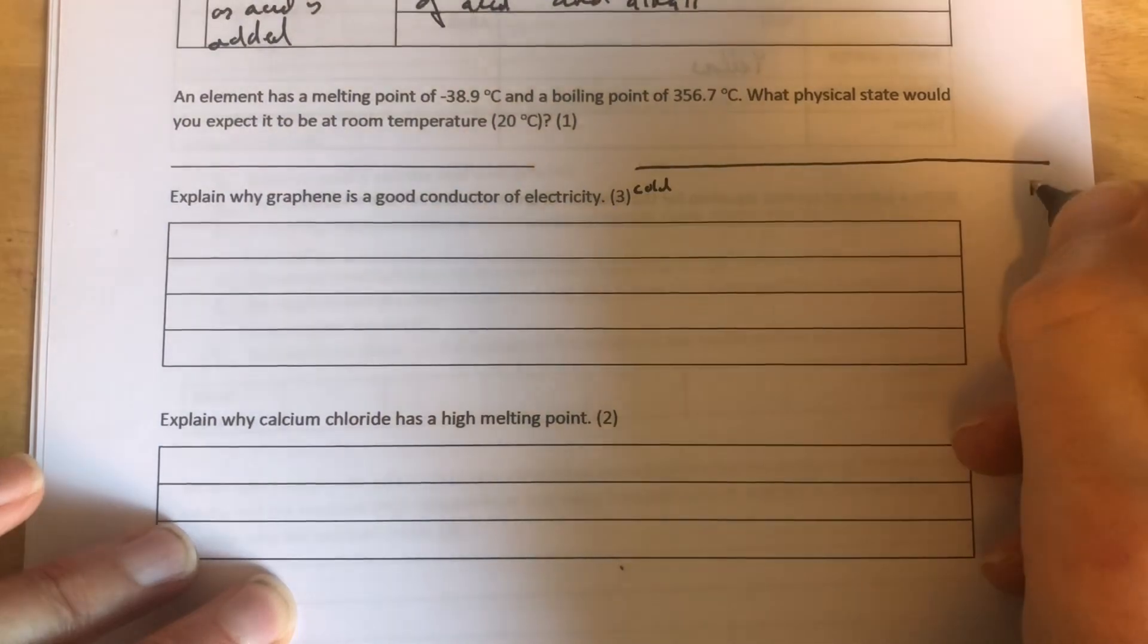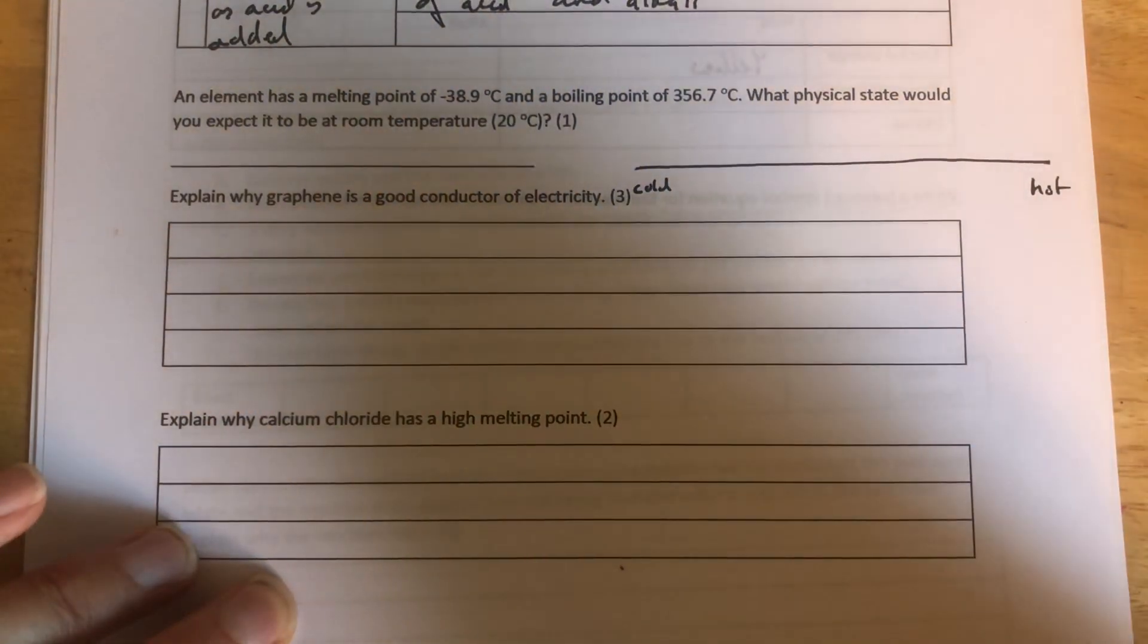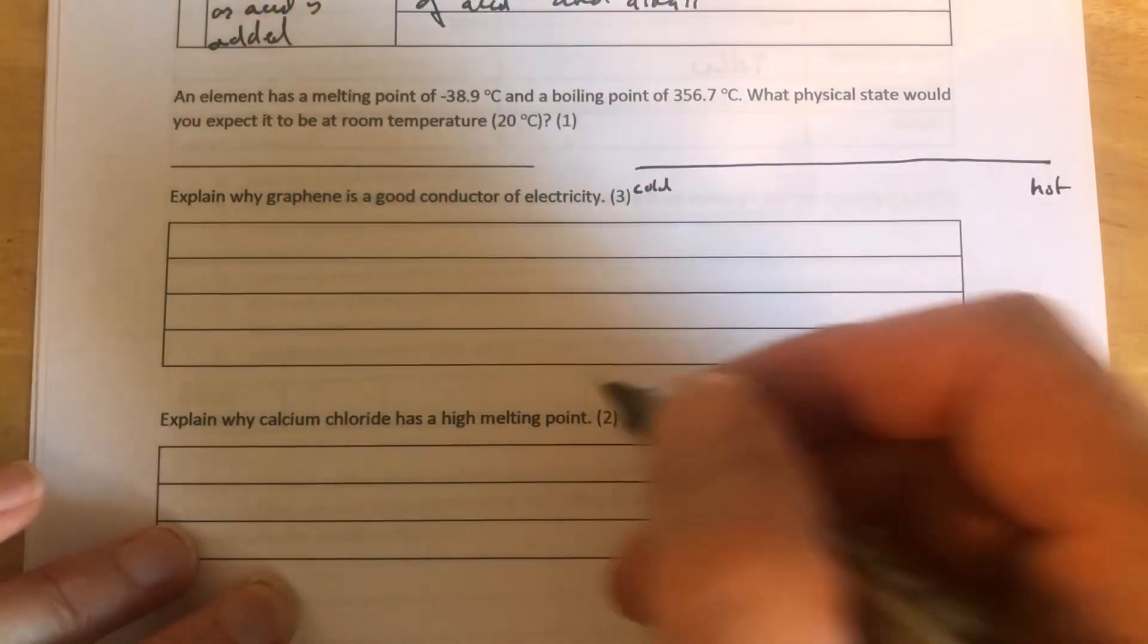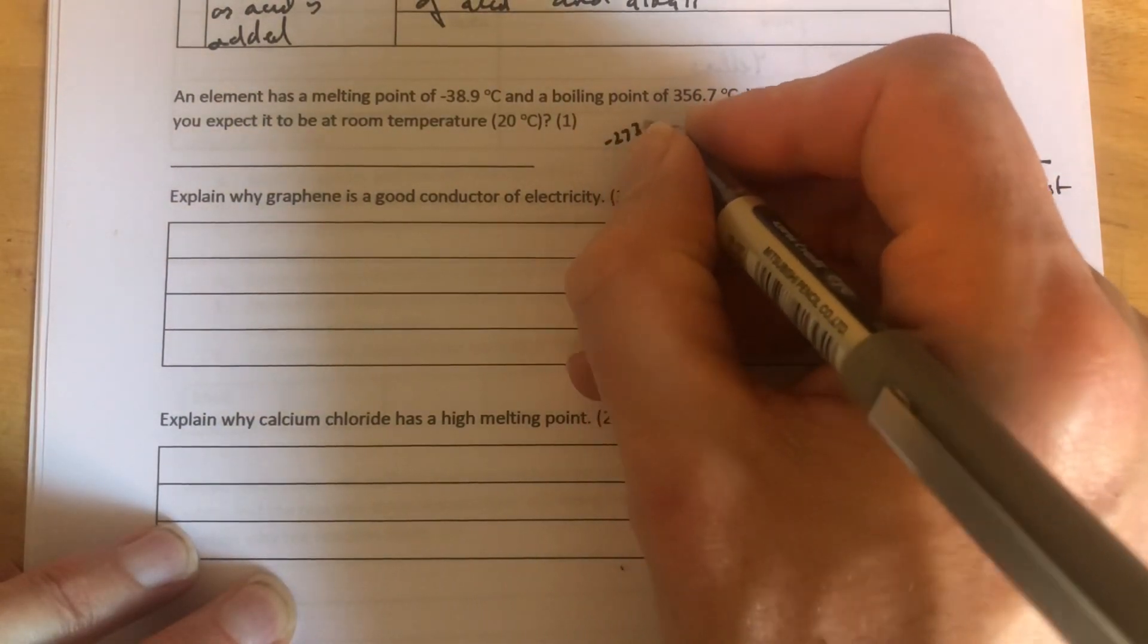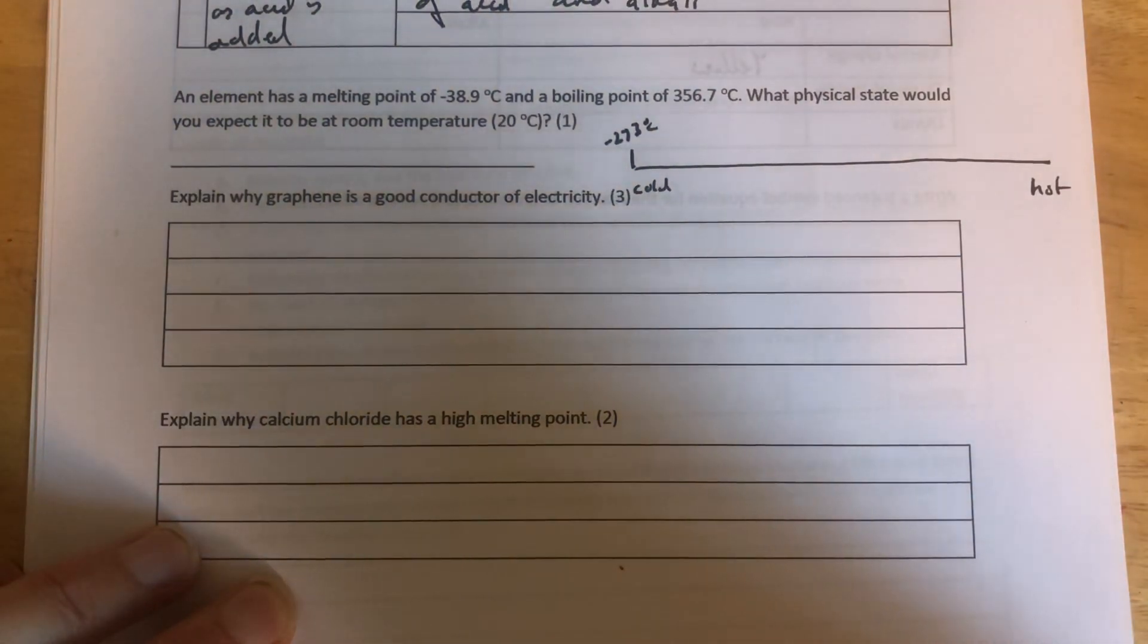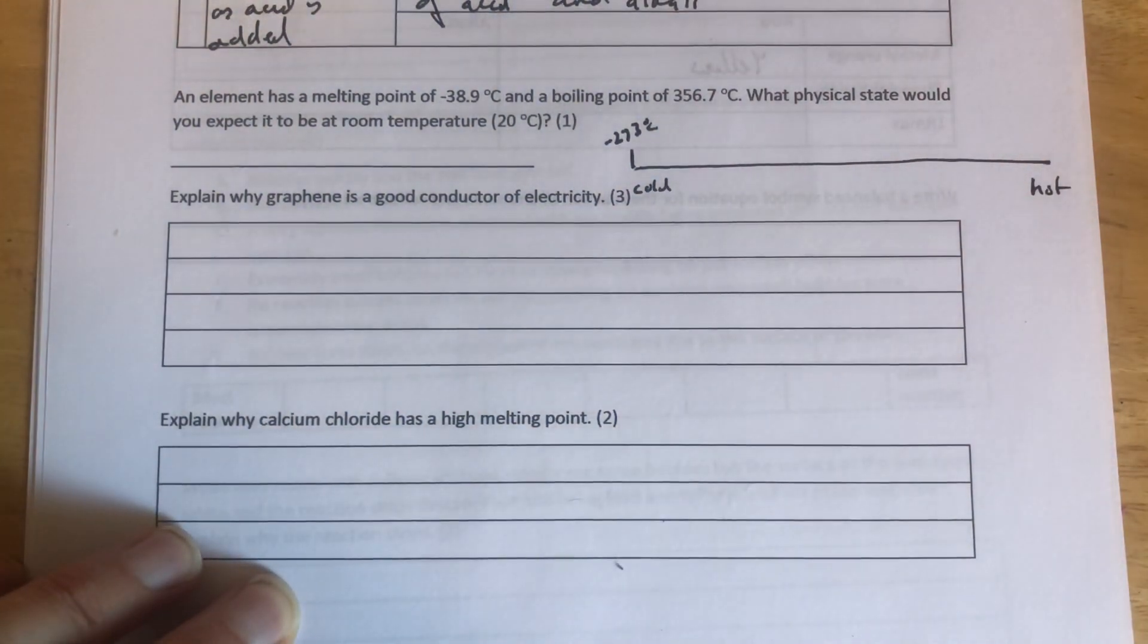We'll have hot over this side. The coldest we can actually get to is minus 273. You don't need to remember that, but that's absolute zero. You can't get colder than absolute zero. Every particle is stationary at absolute zero, minus 273.